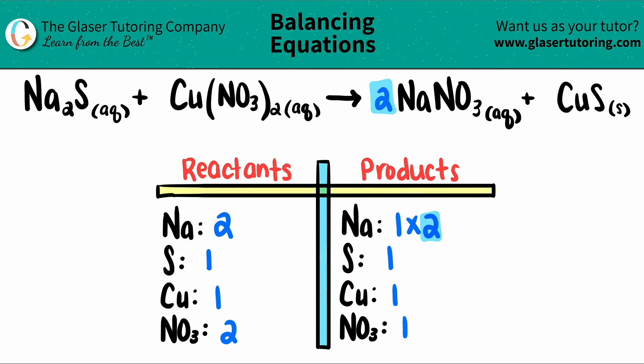But now once you put a coefficient, we just like to make sure that everything is good to go, so we double check. And remember, the coefficients that you use get distributed between all of the elements or polyatomics in that compound. So here I have 2 sodiums, which is what we were trying to do. But now the nitrate number is going to change. I now have 2 nitrates. So I'm going to put a 2 down here. We're going to cross this out and put a 2. But that's the beauty of balancing—if you're trying to balance one thing, chances are you might actually balance another thing. And that's what happened here.